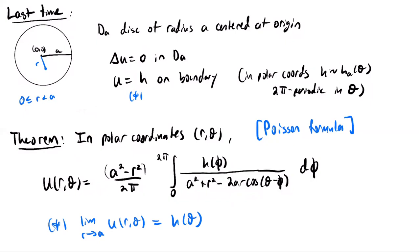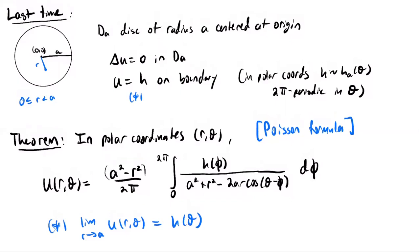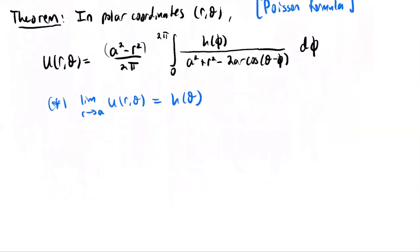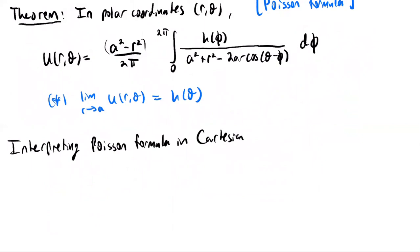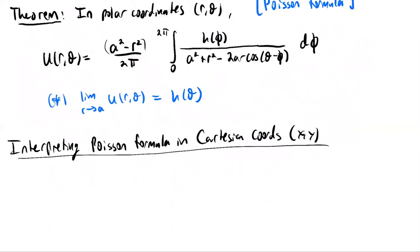Let's suppose now that we want to find a good formula in terms of x and y coordinates, or Cartesian coordinates. We want to talk about interpreting the Poisson formula in Cartesian coordinates. To make this a little bit easier, we're going to use vector notation, thinking about points in the plane as vectors.